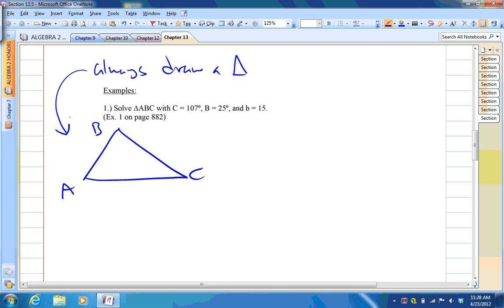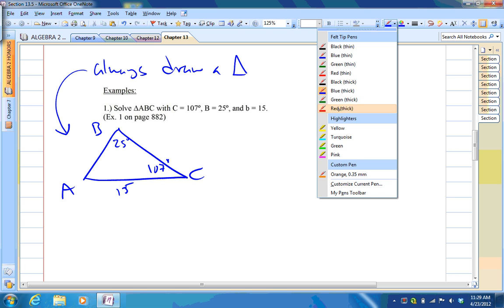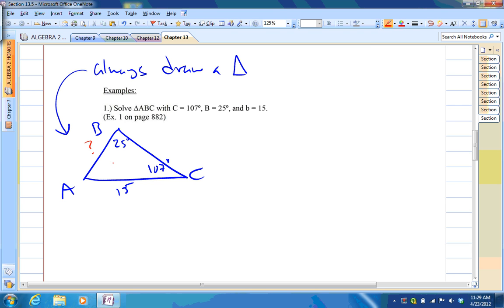Okay. So, angle C. I didn't obviously draw very accurately, but whatever. That's 107 degrees. Angle B, 25 degrees. And side B is 15. So, we don't know this side, nor we know this side, nor we know that angle. So, let's work it out.